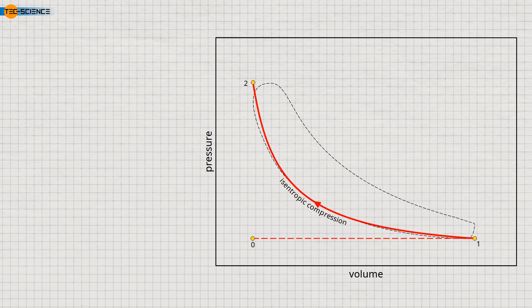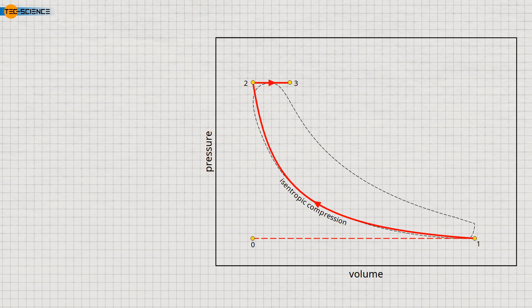Compared to the auto cycle, however, there is no significant increase in pressure. Instead, the piston moves downwards during combustion, so that the expansion of the gases compensates for the pressure increase that would otherwise occur. In an idealized view, the volume increases during combustion of diesel fuel in such a way that the pressure remains nearly constant. This is called constant pressure combustion. Unlike a gasoline engine, the combustion process is described as isobaric rather than isochoric.